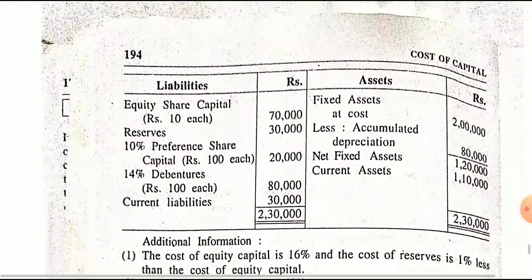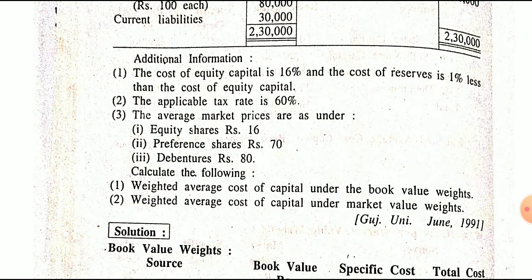Sum number 26: equity share capital is given as a fixed asset. Additional information is given which will be useful to calculate specific cost. Cost of equity capital is 16%, and cost of reserve is 1% less than cost of equity — so cost of reserve specific cost is 15%.